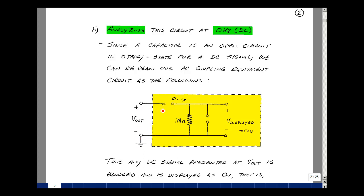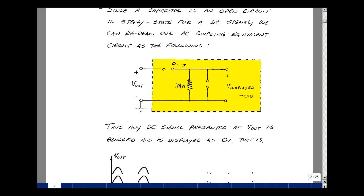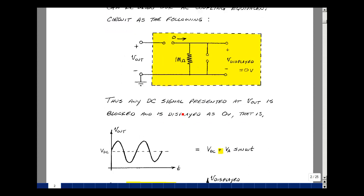So for measuring voltage here, no current is going to flow. There's no current in here, so there's no current in the 1 megaohm. My voltage is going to be equal to 0 across the face of the oscilloscope. Therefore, we could say that any DC signal presented at V_out is blocked and is displayed as 0 volts.